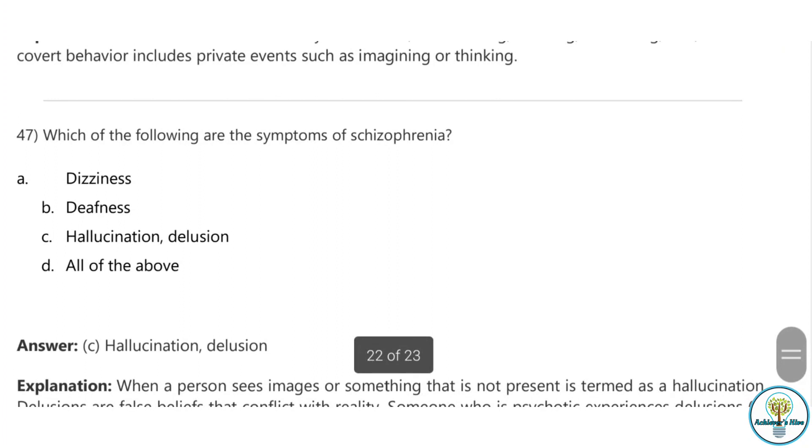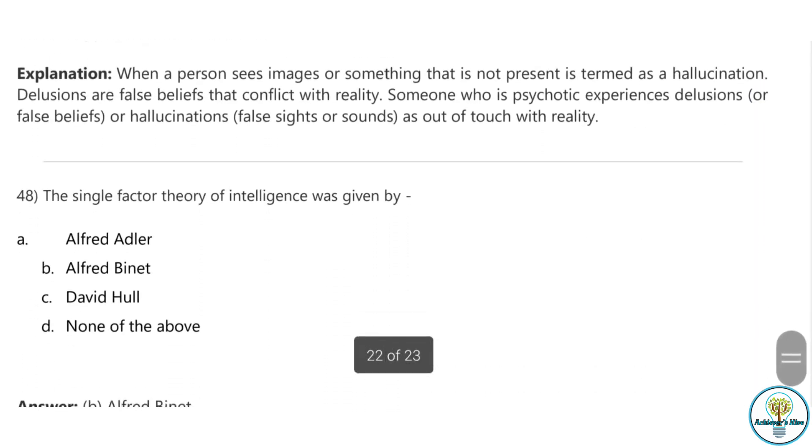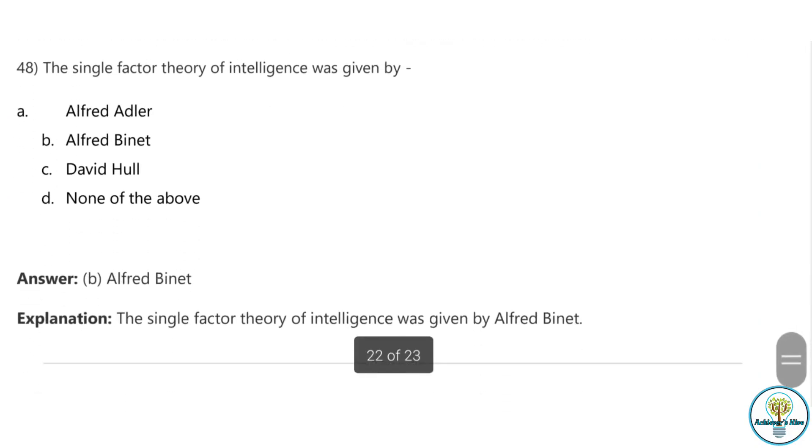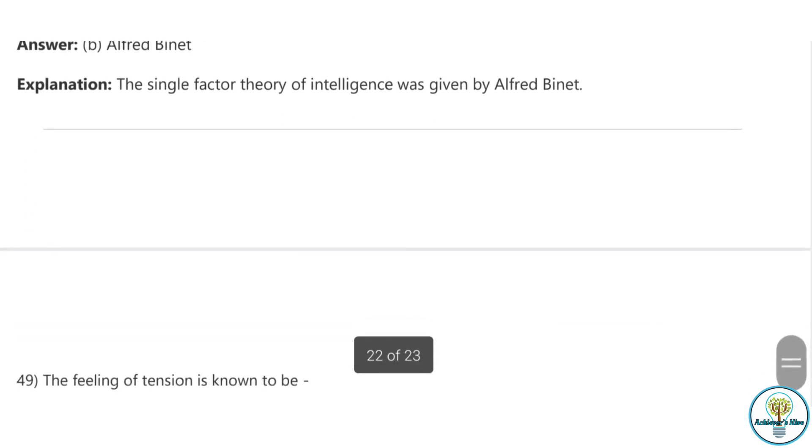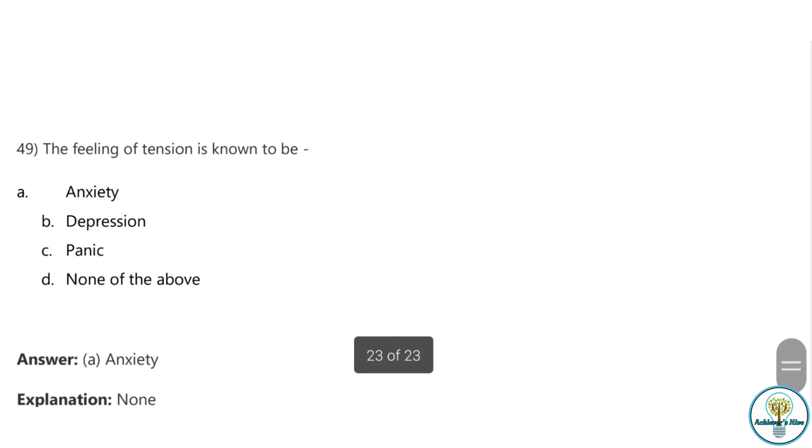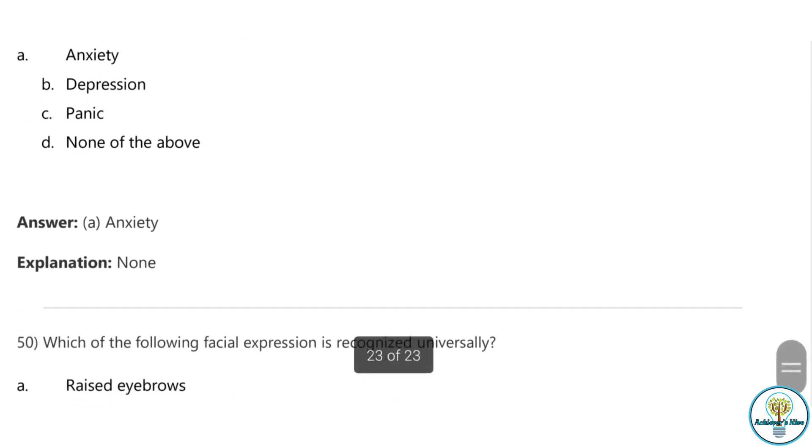Question forty-seven: Which of the following are the symptoms of schizophrenia? Hallucination and delusion are the major symptoms. Question forty-eight: Single factor theory of intelligence was given by Alfred Binet. He is known for giving the uni factor theory or single factor theory. Question forty-nine: The feeling of tension is known to be anxiety. When people feel tensed, they say that we are feeling anxiety.